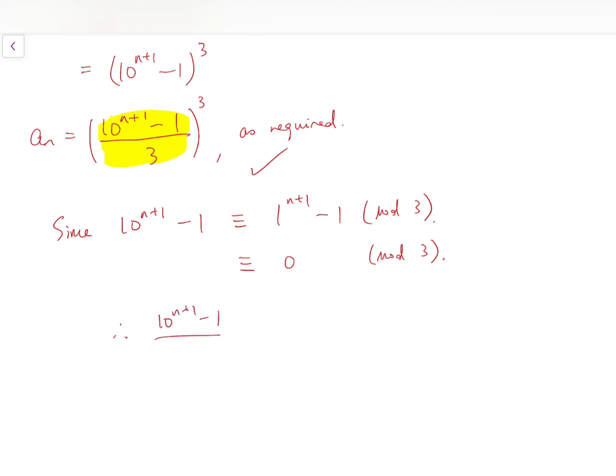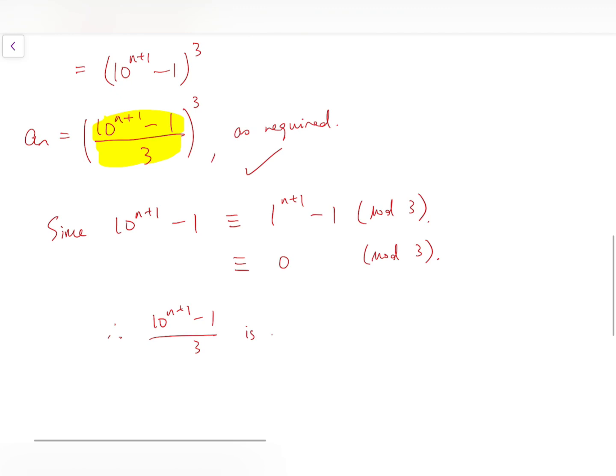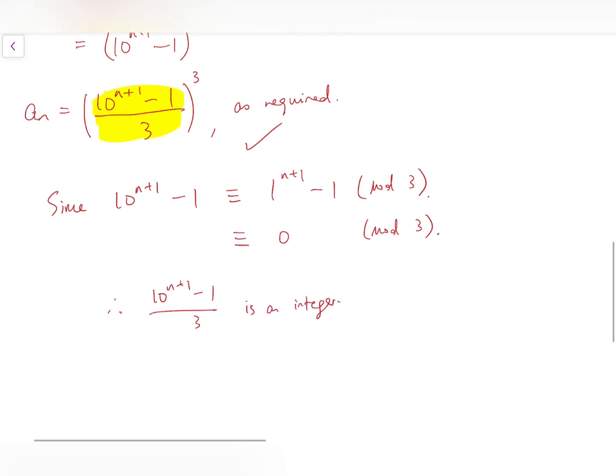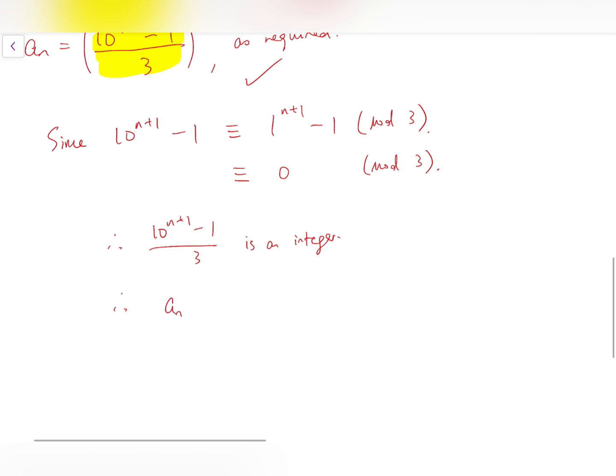So therefore, 10 to the power n plus 1, minus 1, over 3, is an integer. So then we can say that, therefore, a_n is always a perfect cube for all natural numbers n. And so the proof is complete.